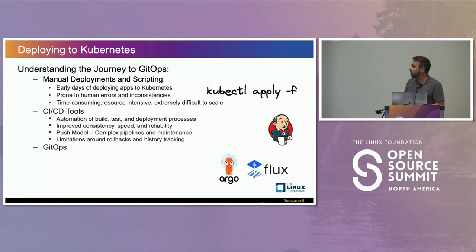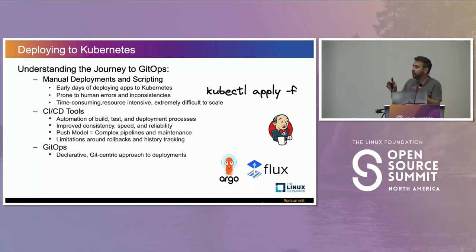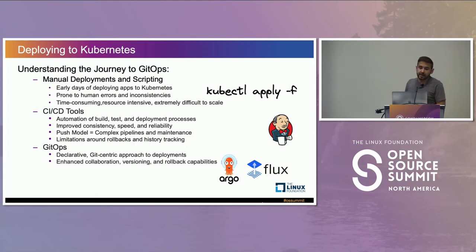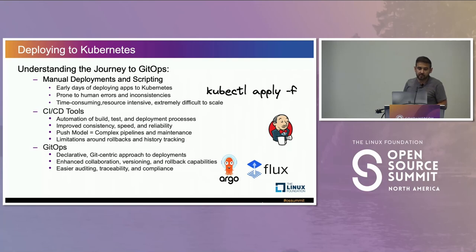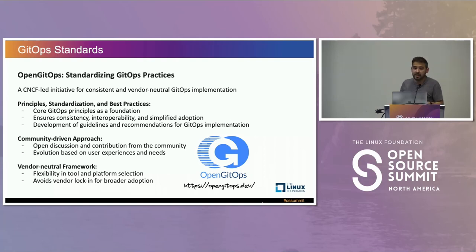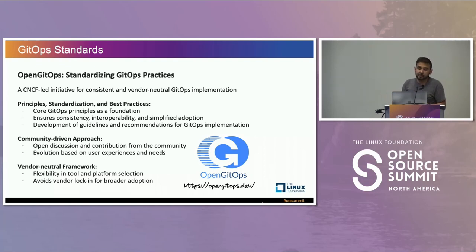And then we have GitOps, which makes things a lot easier. There are great operators such as Argo and Flux that were created so you can declare your implementation and infrastructure — what you see is what you get. That enhanced collaboration, versioning, and allows you to do rollbacks much more easily. It's also easier to do audits, traces, and ensure compliance. GitOps has been growing so much that there is now an organization called Open GitOps, which works to standardize the GitOps principles with a community-driven approach. I highly recommend you check them out.